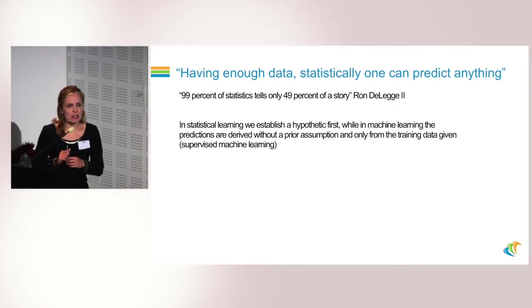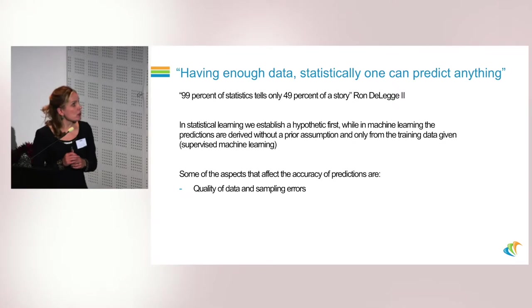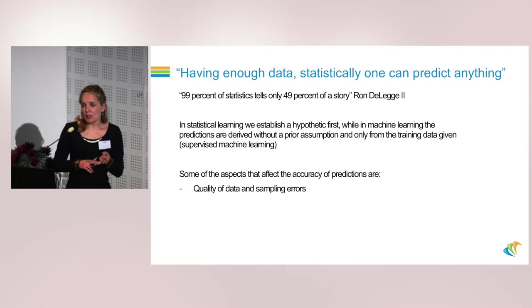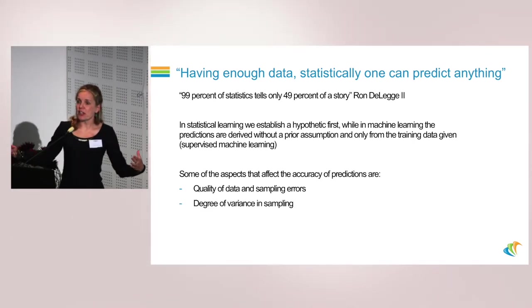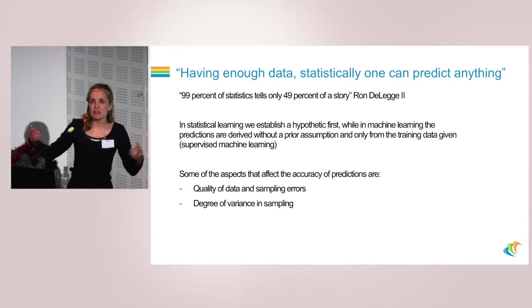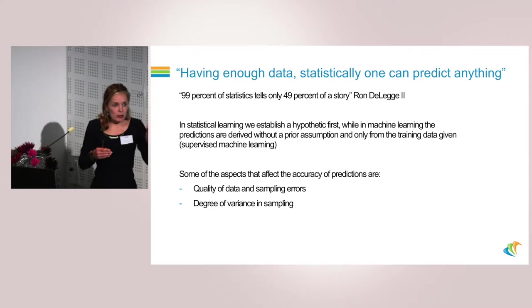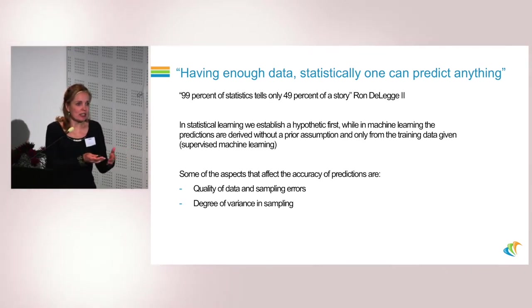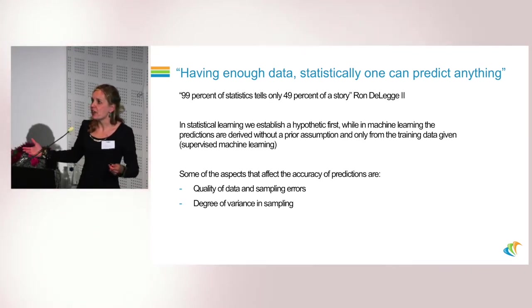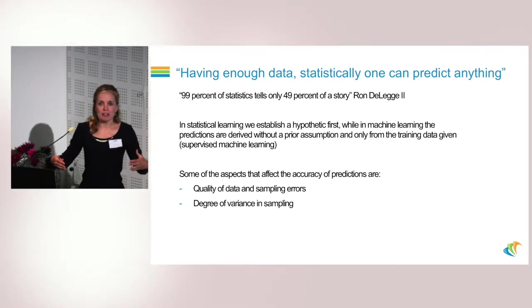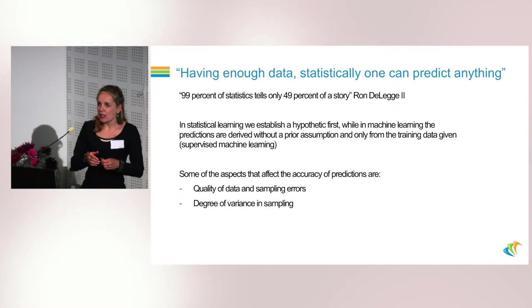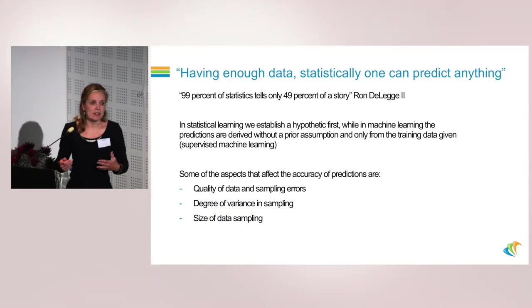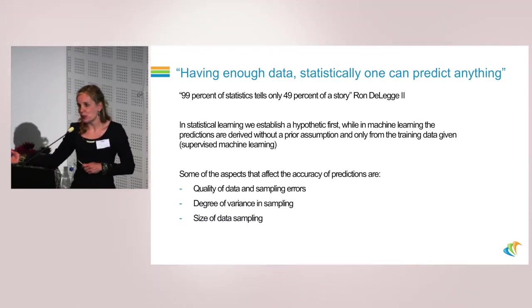How do we determine the accuracy of these predictions? First, the accuracy is determined by the quality of your data. However, we need some degree of variance in the sampling of our data. If I narrow my data too much, I am biasing my solution to my training data. That's why I need variance and different demographics, different geological aspects, compounding towards training data — and of course the size of data sampling: how much data is enough, whether it will be three wells or 200 wells.